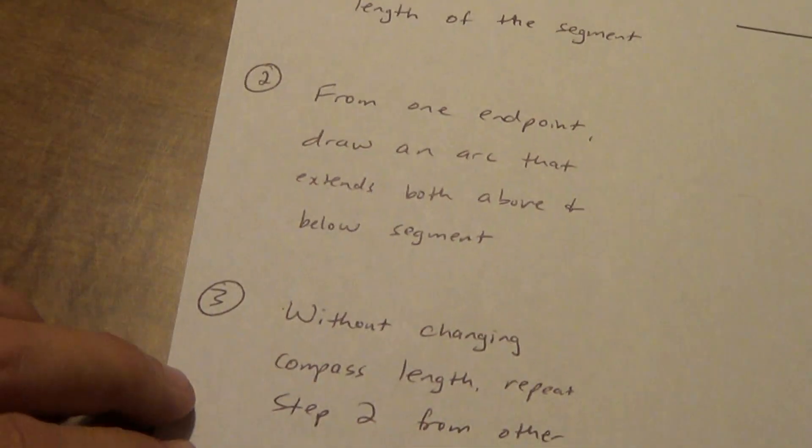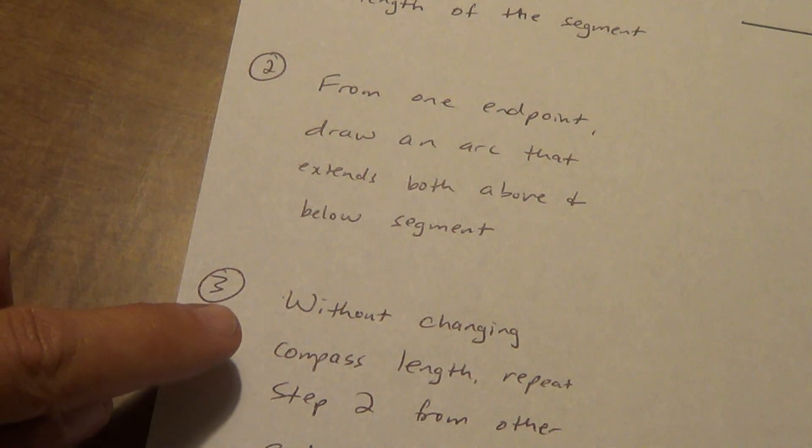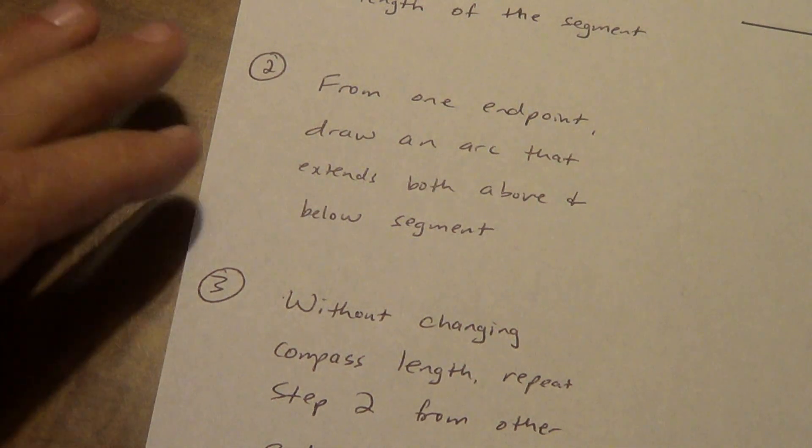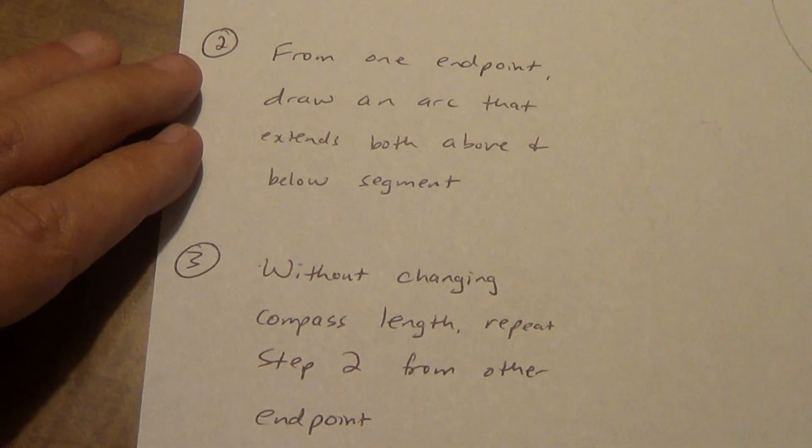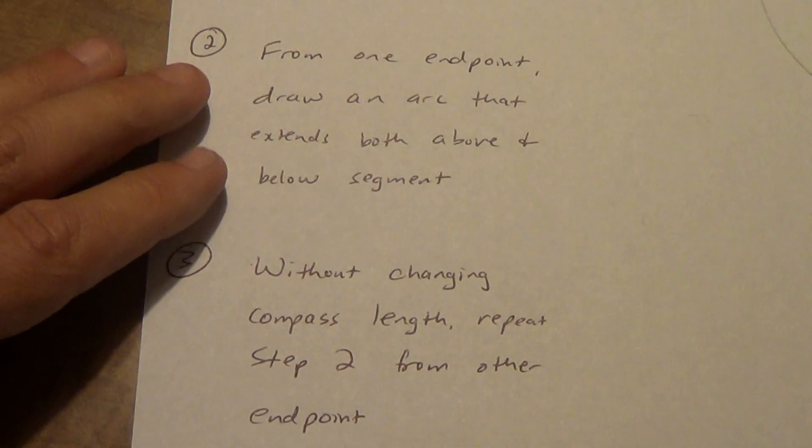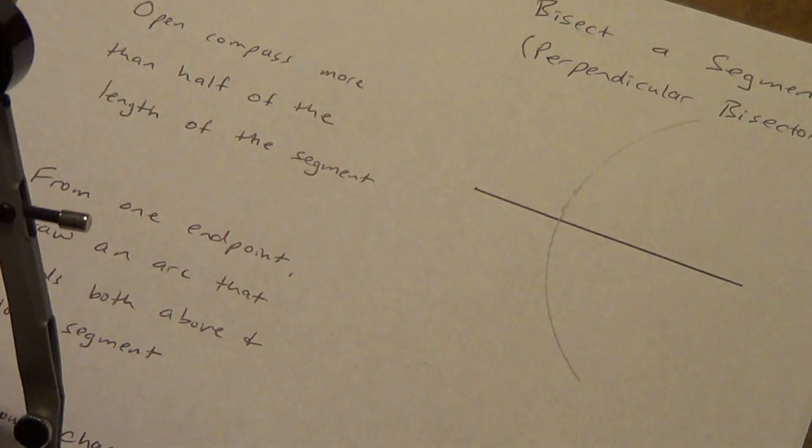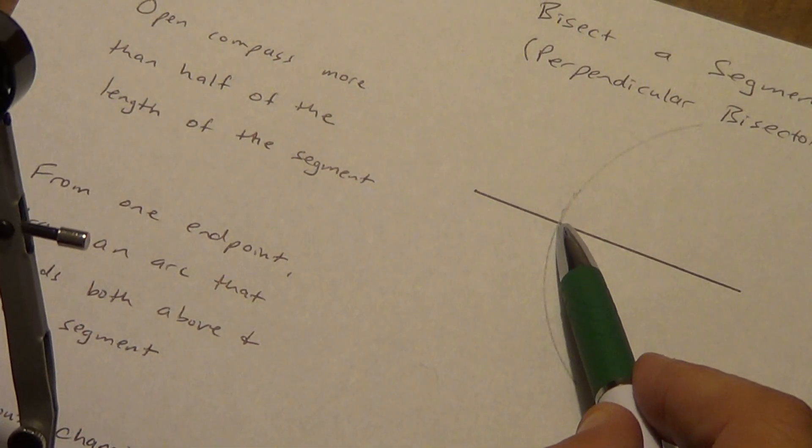Now this is very important for step three. Without changing your compass length. Do not let your compass length change when you do this. What we're going to do is we're just going to repeat step two from the other end point. Now when I say the other end point, that does not mean this point of intersection right here.